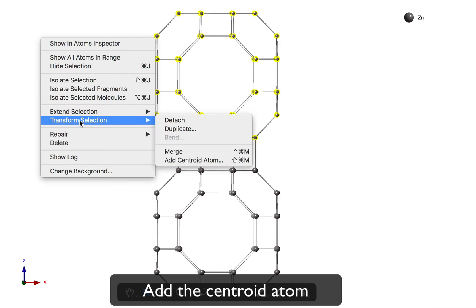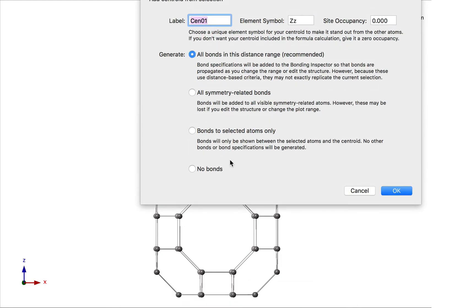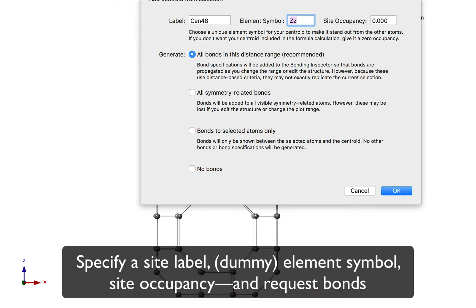We do transform selection, and we're going to add a centroid atom. Now at this stage we're prompted for some parameters. We need a label. I'm going to call this centroid 48 because it's a 48-vertex polyhedron. We need an element symbol. Now it's useful to use a dummy element symbol so you can easily differentiate your dummy atoms from the regular atoms.